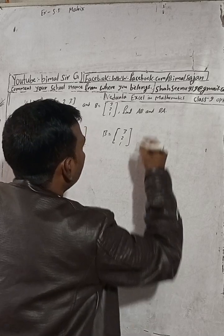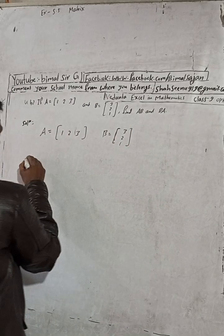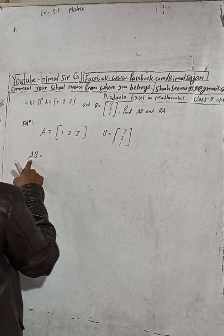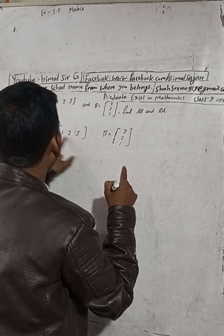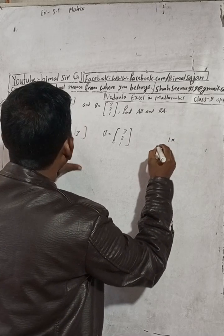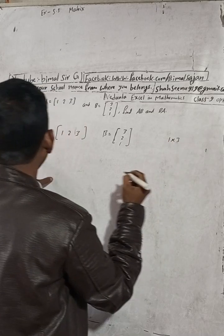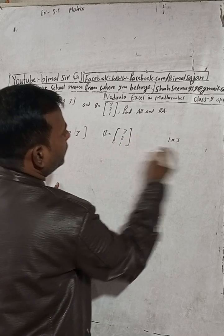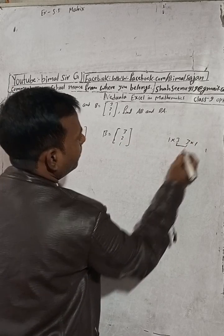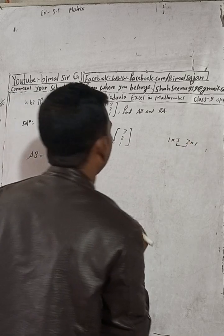For A·B, we first check whether it is possible or not — check the defined order. To find A·B, what we have to do: write the order of A. What is the order of A? One row and three columns. And for B, this B has three rows and one column. We can see that the middle values are equal, so A·B is possible.